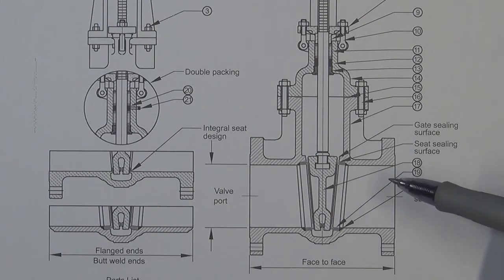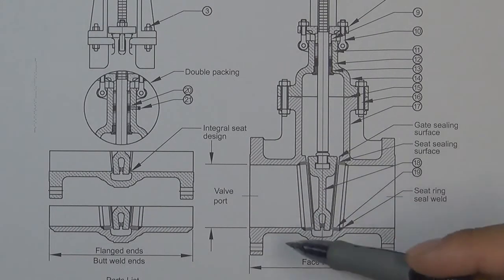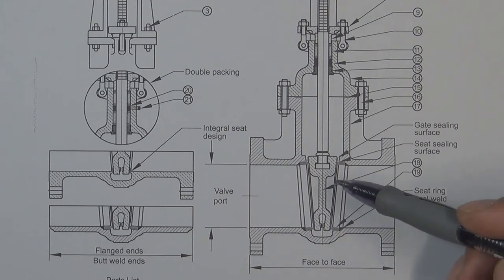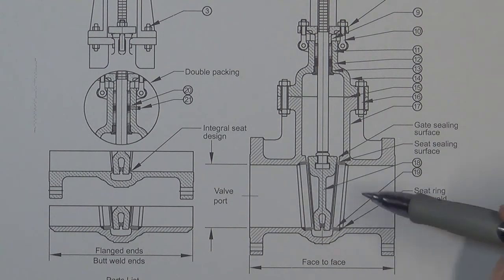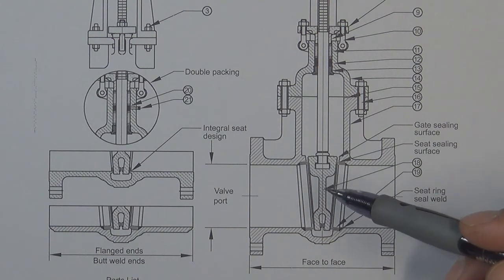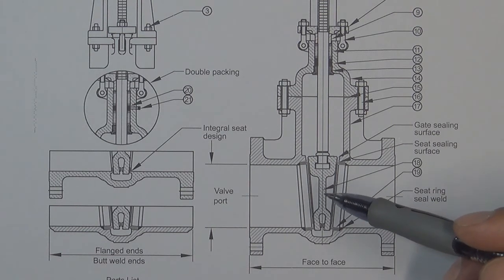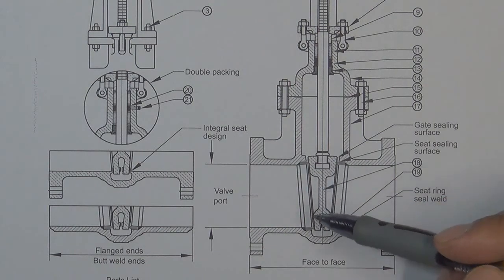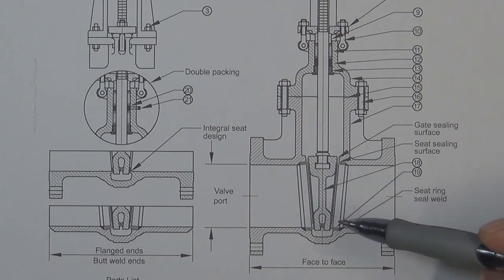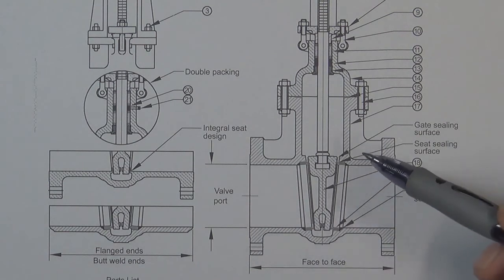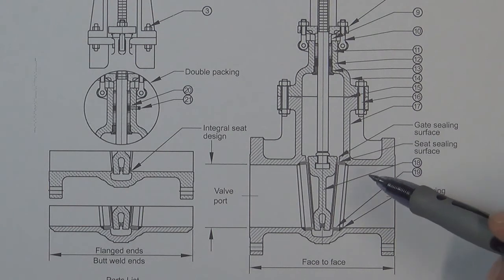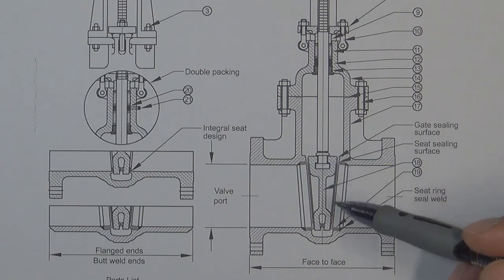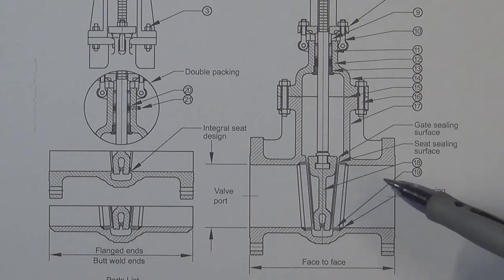The reason why most gate valve manufacturers choose this kind of design is because this one-piece wedge shape valve gate is very easy to produce. It is one piece, so it is easy to cast and also easy to machine. We just need to finish each side of the wedge shape and we can make a valve gate. So this kind of gate valve can be produced very quickly.